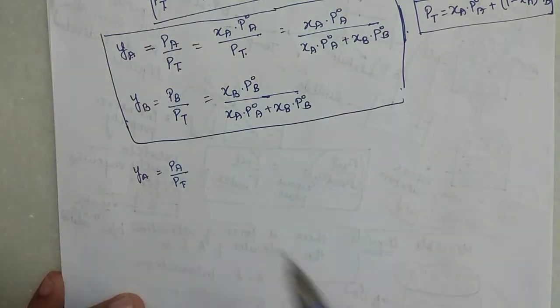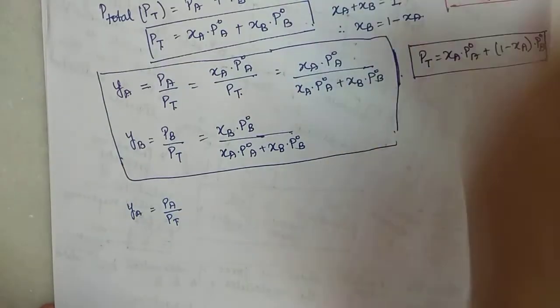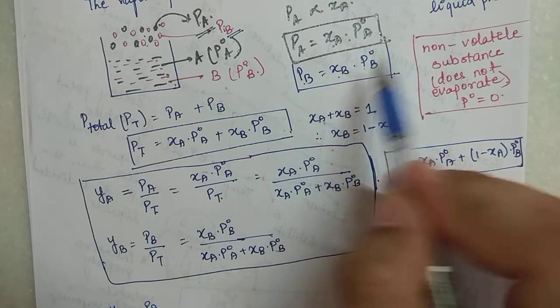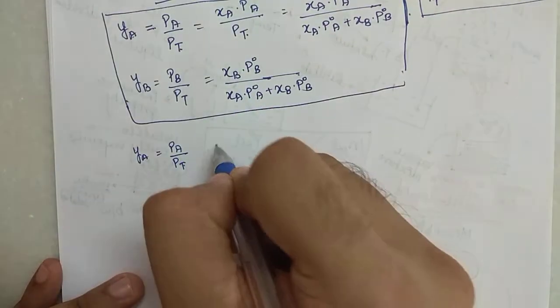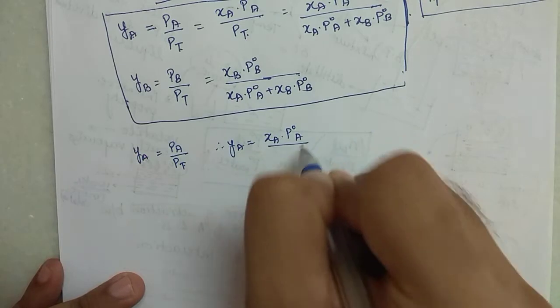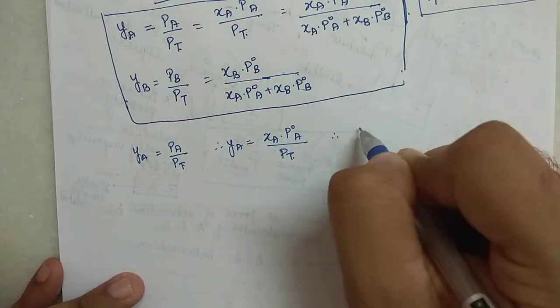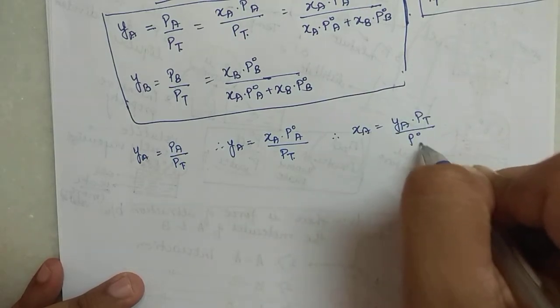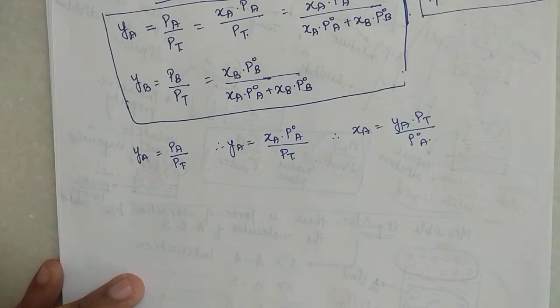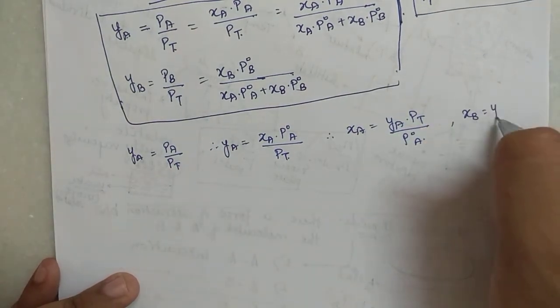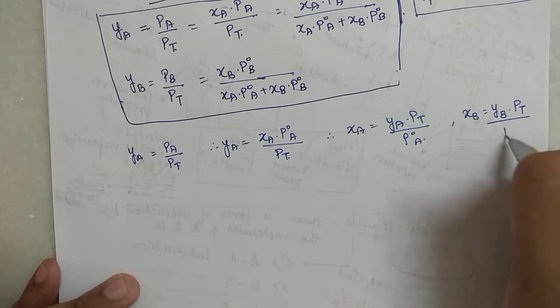So I can write pa as mole fraction of A into P°A divided by P_total. So I can write mole fraction of A as ya into P_total upon P°A. Similarly by the same logic, mole fraction of B can be written as yb into total pressure upon P°B.